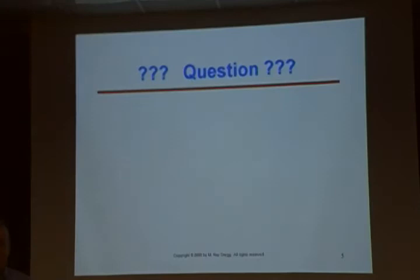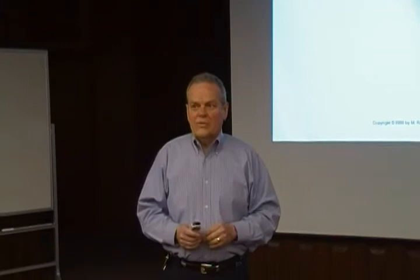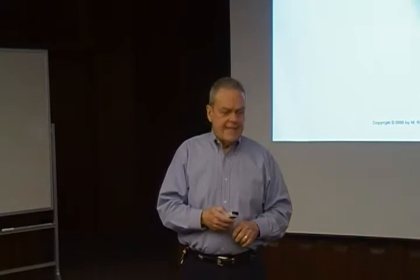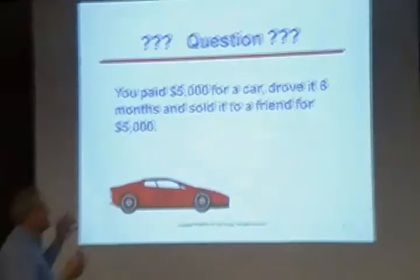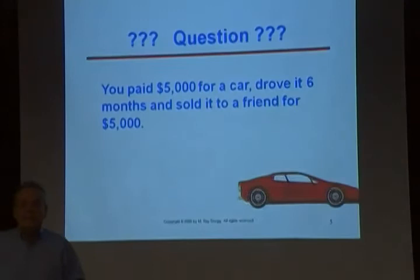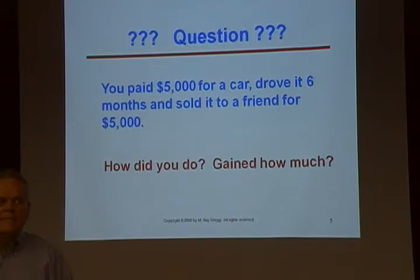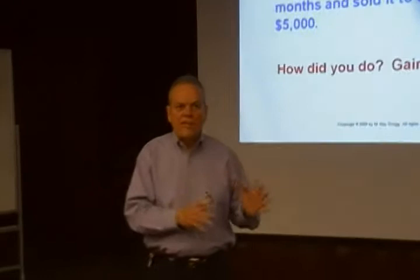Too often students overthink this, and I don't get quite the response I want. I'm about to ask you a really simple question, to which I'd like a really simple answer — almost a reflex reaction. Don't think too much right this minute. So, let's say that you bought a car for $5,000, and later you sold it to a friend for $5,000. How'd you do — gain or loss? Let's go over it one more time: you bought a car for $5,000 and sold it for $5,000. How'd you do?